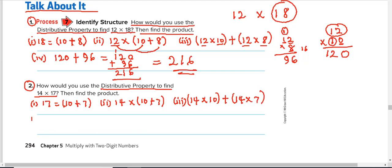And finally, we find the product. 14 times 10 will give us 140. 14 times 7, 7 times 4 is 28. We write 8 and take 2 up.